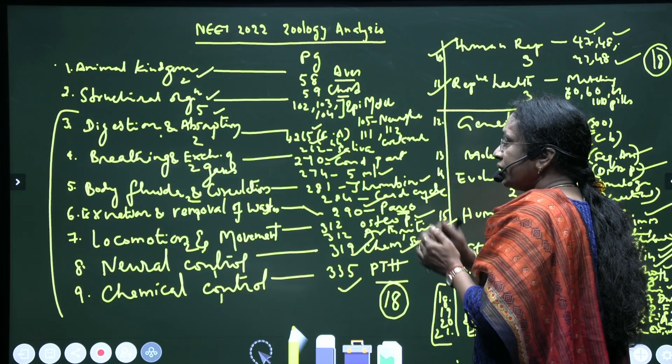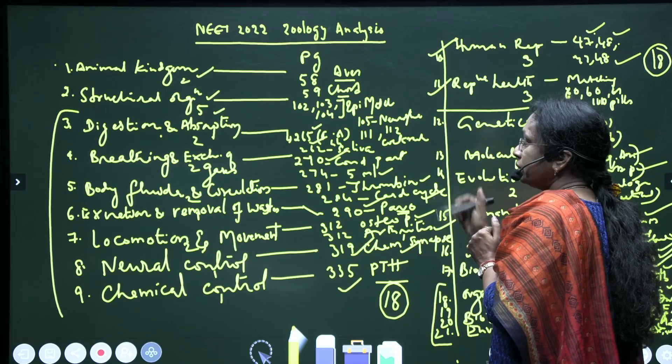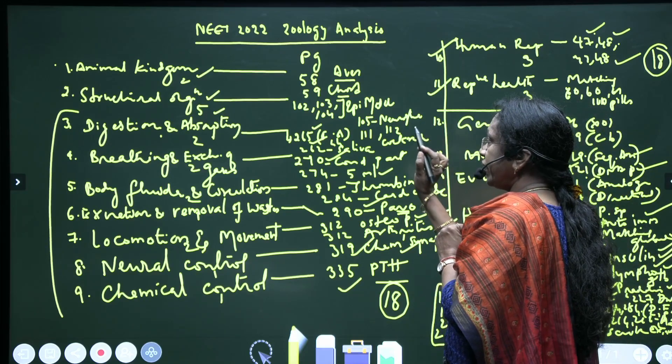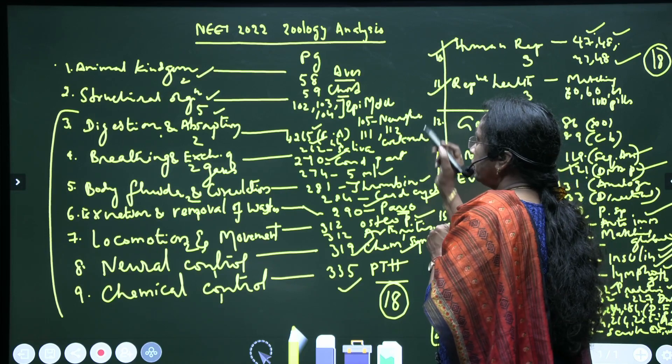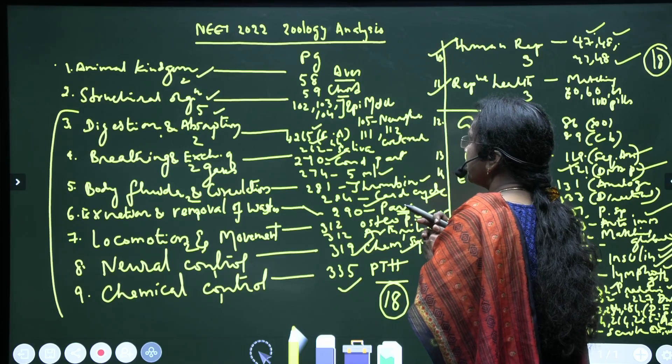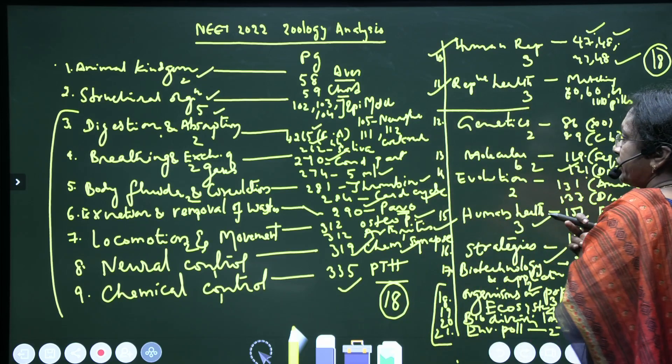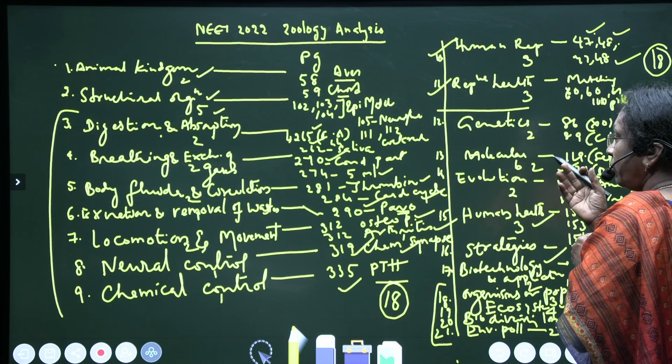In Animal Kingdom in Plus One, we got two questions from pages 58 and 59. From the 58th page, we got the question from crop and gizzard, and chordates - very known statements like 'all vertebrates are chordates'.